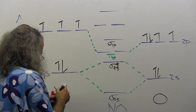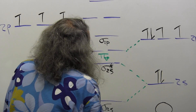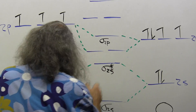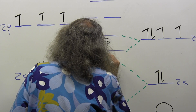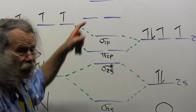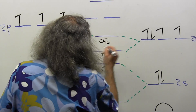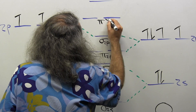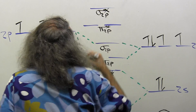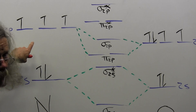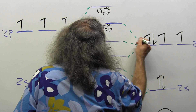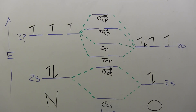The sigma 2p arises from the 2p orbitals. I can draw the lines connecting those to their parent atomic orbitals. I also get the anti-bonding orbitals corresponding to the pi interactions — I'll call these pi star 2p and sigma star 2p, which arise from combinations of the parent atomic pi orbital combinations.